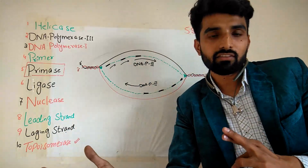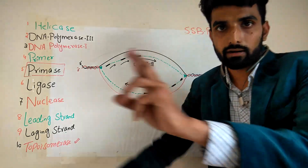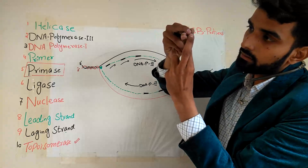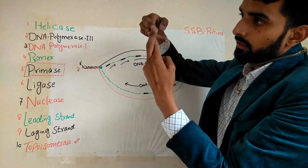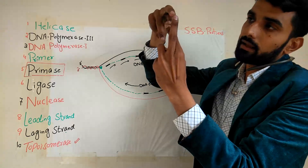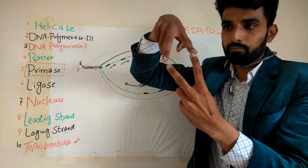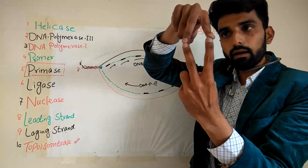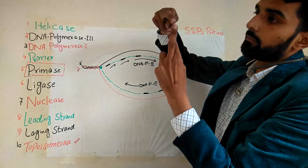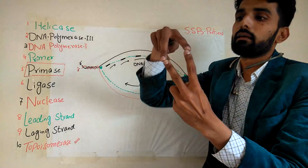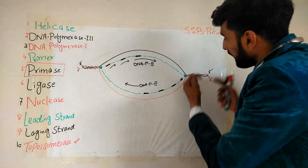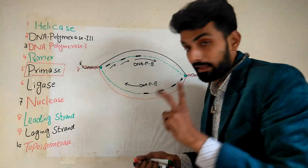With one domain, topoisomerase will cut the strand, and with the other domain it will ligate the strand again. For example, topoisomerase will come and break the phosphodiester bond on one DNA strand. When this bond is broken, the super twist will untwist. Once the super twist is resolved, the bond will be ligated again by the second domain. In this way, topoisomerase keeps untwisting the DNA.